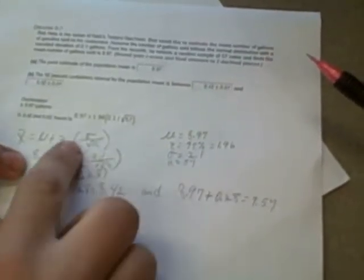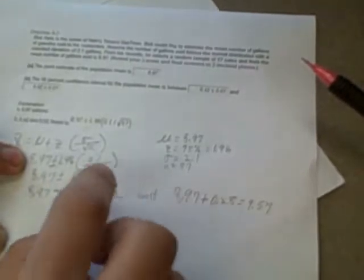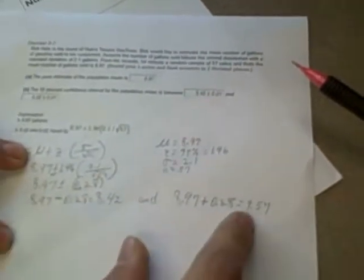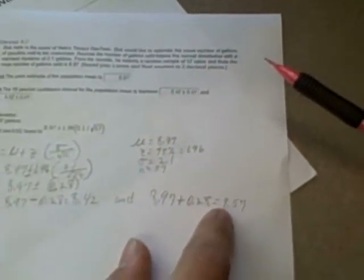And to find the upper value, we add 0.28 to mu, 8.97, which gives us 9.257. So the intervals are 8.42 and 9.52.